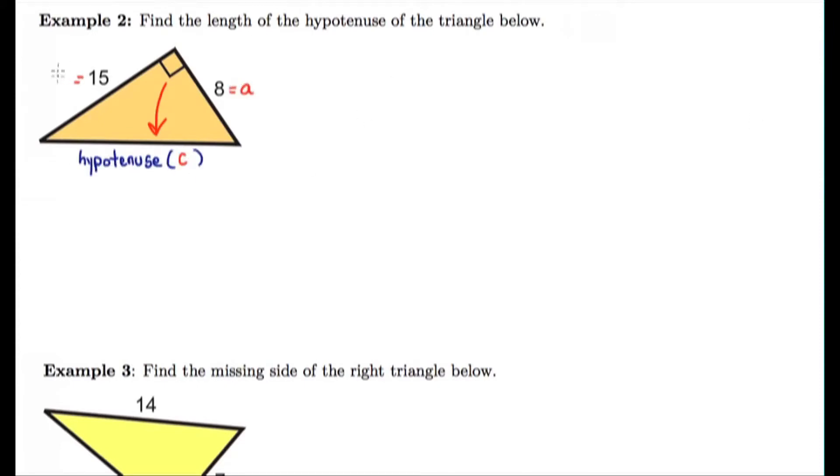Example two. Find the lengths of the hypotenuse of the triangle below. We know the two legs because they make up the right angle. We don't know the hypotenuse. So we can substitute 8 and 15 in for the legs and solve for c.